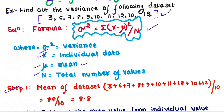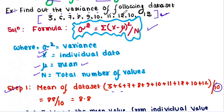Step 1 is to calculate the mean of the data set. We add all the values and divide by the total number of values, which is 10. Counting the values: 1, 2, 3, 4, 5, 6, 7, 8, 9, 10. In this way we get the mean of the data set, which is 8.8.